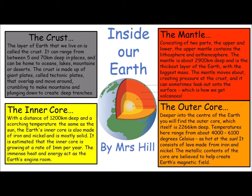So, we have 'Inside Our Earth' by Mrs. Hill. The crust: the layer of earth that we live on is called the crust. It can range from between 5 and 70 kilometres deep in places and can be home to oceans, lakes, mountains or deserts. The crust is made up of giant plates called tectonic plates that overlap and move around, crumbling to make mountains and plunging down to create deep trenches. The mantle: consisting of two parts, the upper and lower, the mantle contains the lithosphere and the asthenosphere. The mantle is about 2,900 kilometres deep and is the thickest layer of earth with the biggest mass. The mantle moves about, creating pressure at the crust, and it can sometimes leak out onto the surface, which is how we get volcanoes.